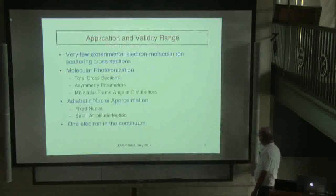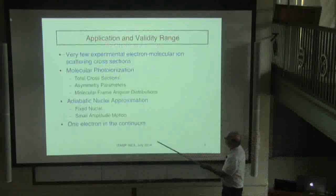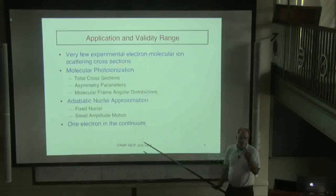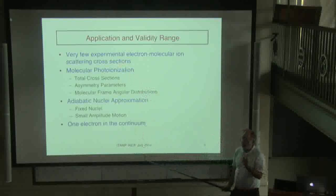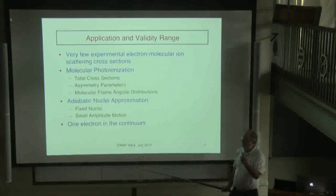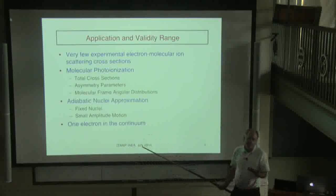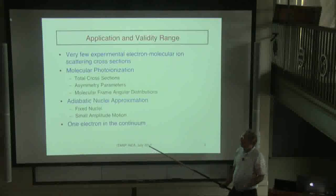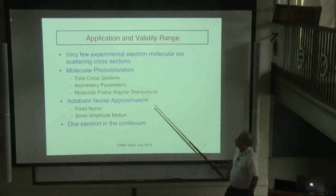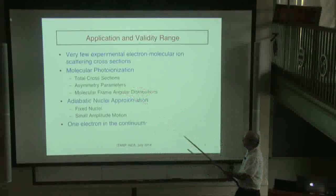The change in title basically comes from the fact that there are very few experimental electron molecular ion differential cross-sections, or total cross-sections — maybe H2+, that's about it. So one way of getting at the electron molecular ion scattering is looking at molecular photo-ionization. It's the same electronic wave function, and there are lots of experiments for photo-ionization. So what we've looked at mostly is molecular photo-ionization.